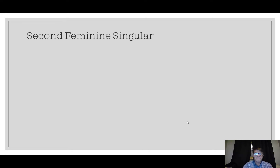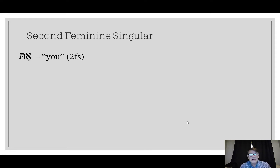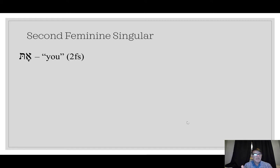For now, let's learn the second feminine singular — when I'm referring to you and I'm talking to a female. Here it is: at. So ata was you, masculine. At is you, singular feminine. You might remember the pronominal suffix for your when it was masculine was ka, and when it was your referring to a woman, it was just k — it chopped the vowel off. In a sense it's the same thing here: ata is masculine, and if you chop that final vowel off, at, you've got the feminine.